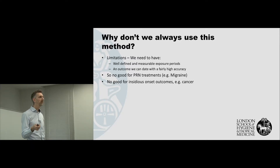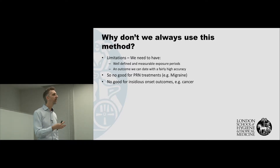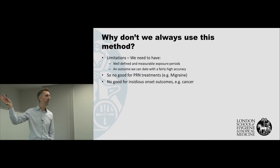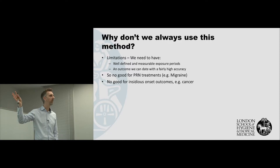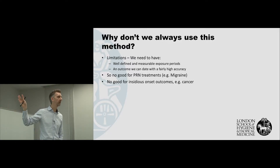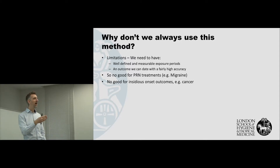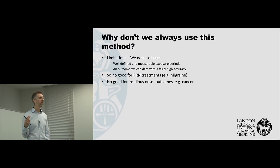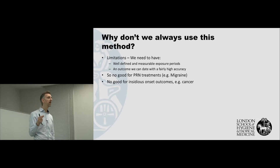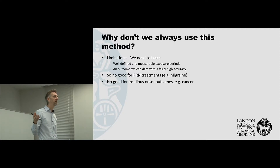This method won't work for treatments that people take as needed. If somebody has migraines and gets a prescription for an anti-migraine pill, they're only going to take it when they think they're going to have a migraine, so I don't know when to put the high-risk period on the observation timeline. Similarly, an outcome where the exact start date is difficult to measure — like cancer, where we typically don't know when it starts — won't be appropriate for this design.